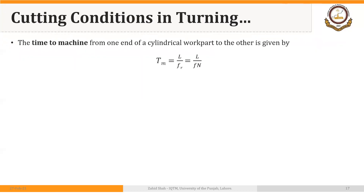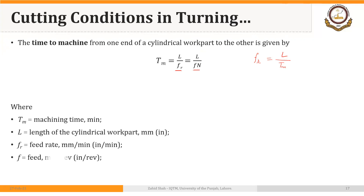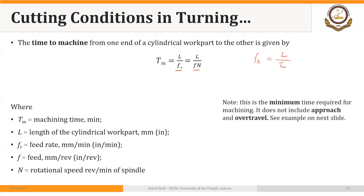The time to machine from one end of a cylindrical workpiece to the other is given by the length of the cut divided by the feed rate, where feed rate equals feed times RPM. This is essentially distance over speed. Note that this is the minimum time required for machining — it does not include approach and over travel, which we will cover in the following slide.